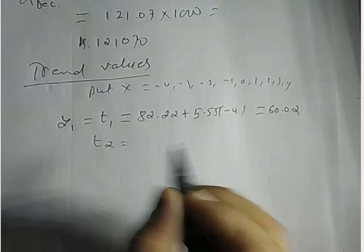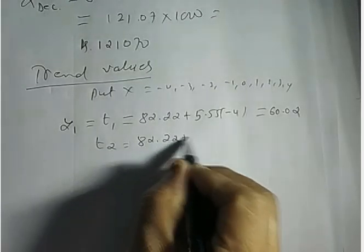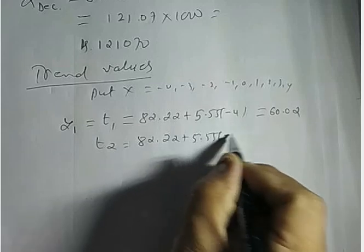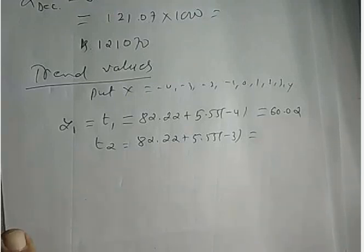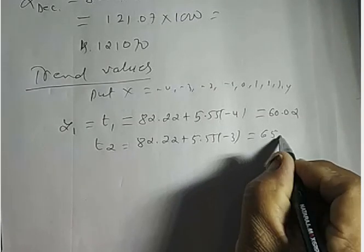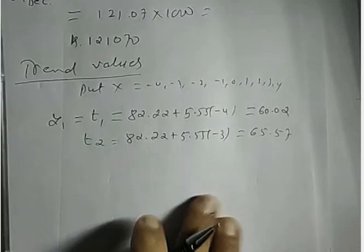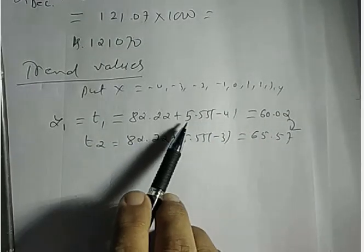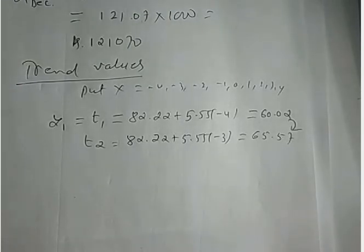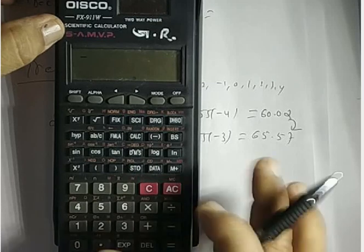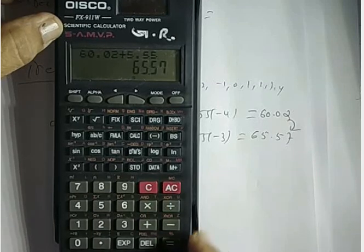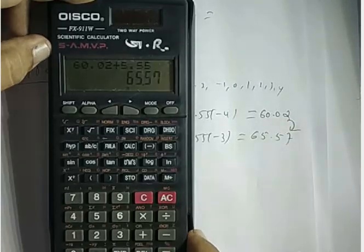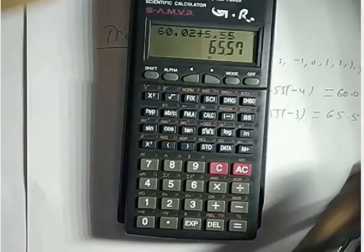For t2: 82.22 plus 5.55 times minus 3 equals 65.57. Each successive trend value increases by 5.55. So 60.02 plus 5.55 gives 65.57.